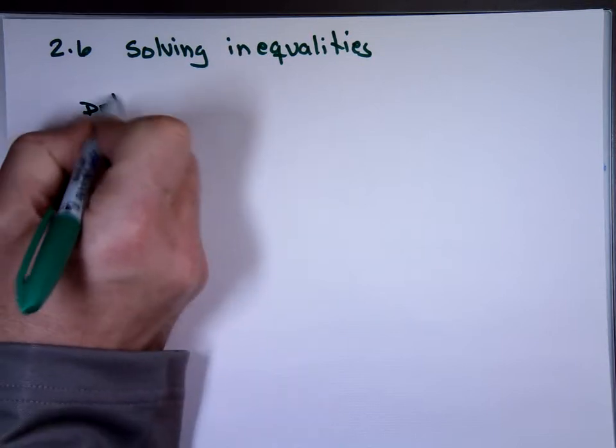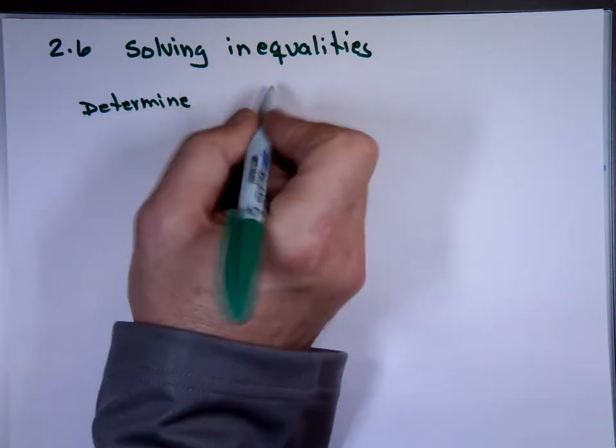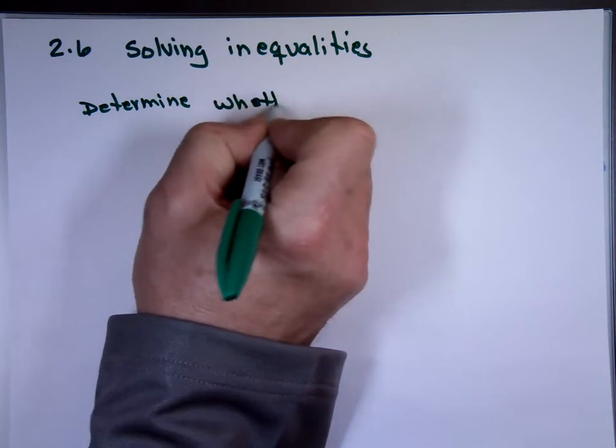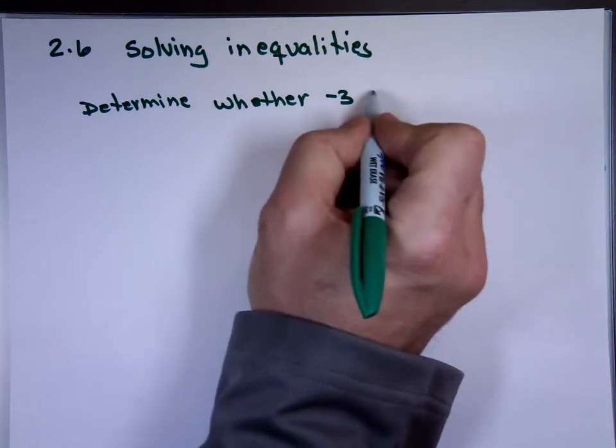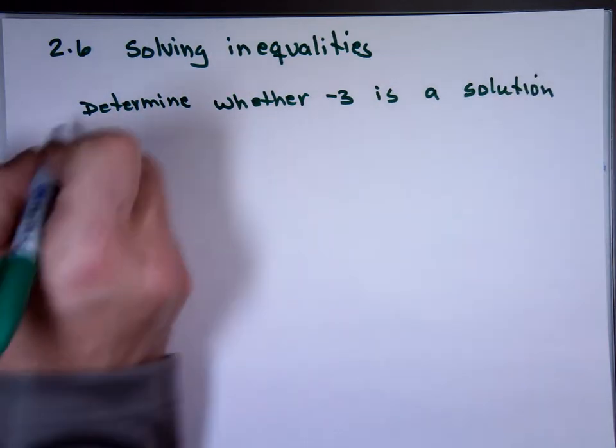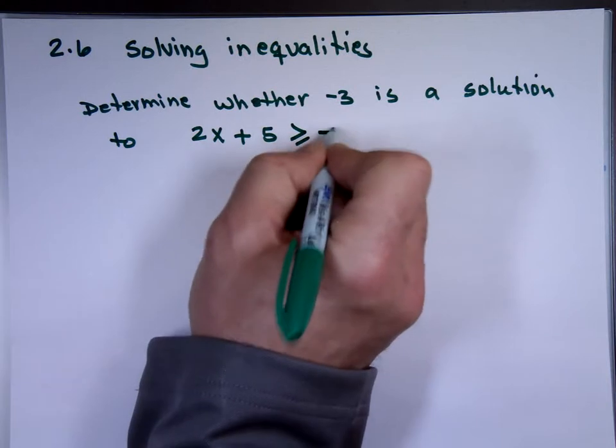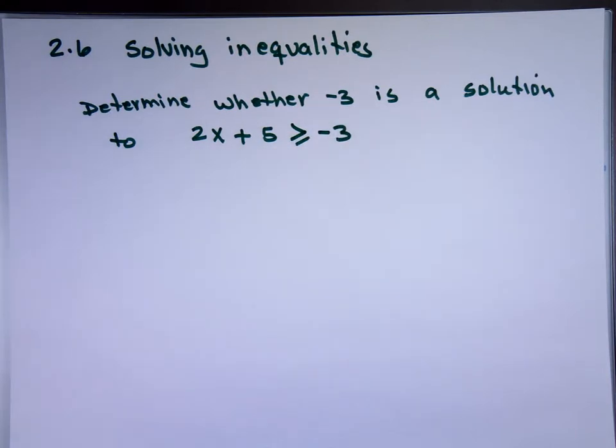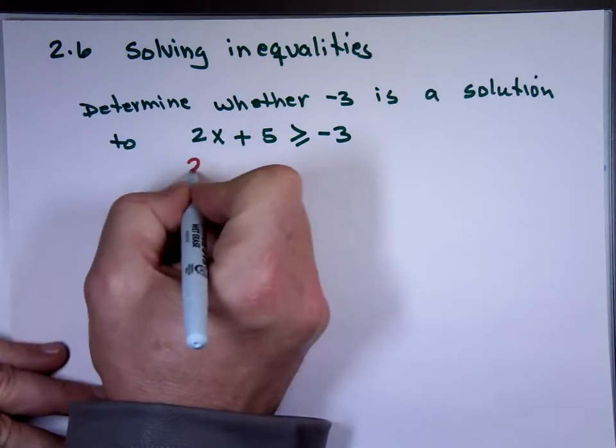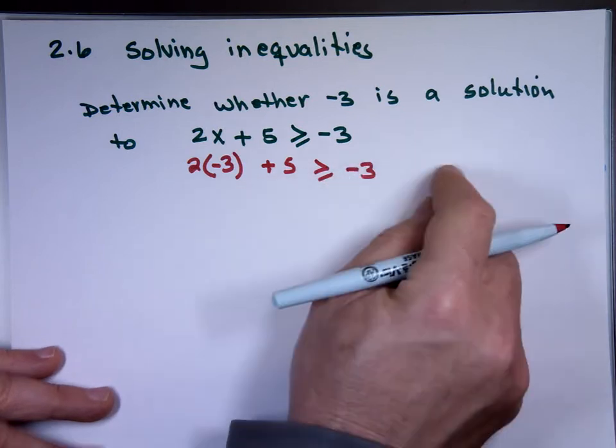Determine whether negative 3 is a solution to the following inequality: 2x plus 5 is greater than or equal to negative 3. How do we know if minus 3 is a solution or not? We plug it in. 2 times, replace x with negative 3, and if the answer is true, that is a solution.